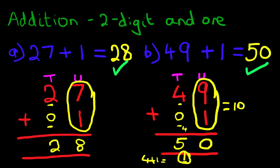And that is correct. And that is how we do addition of two-digit numbers and 1 using the vertical format. Thank you very much.